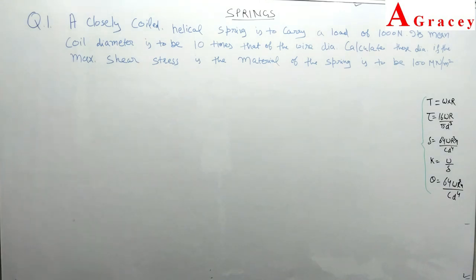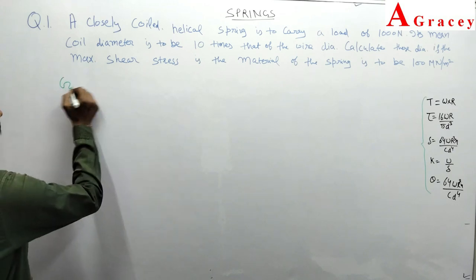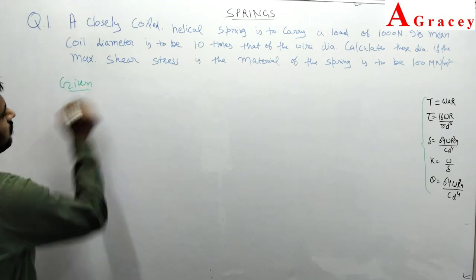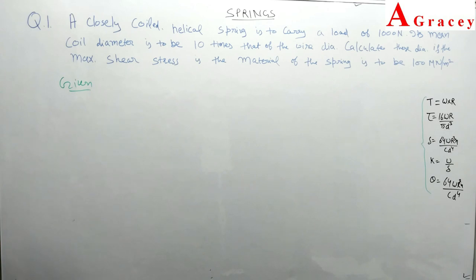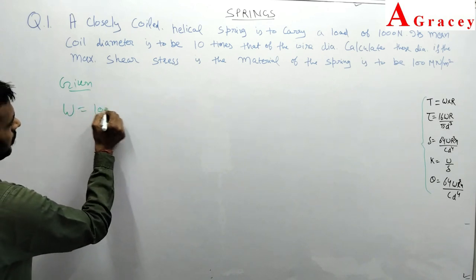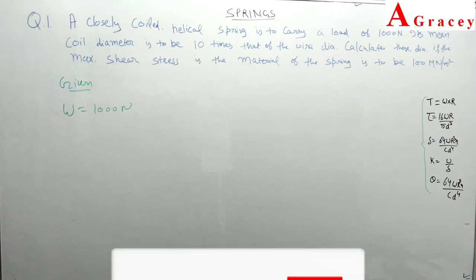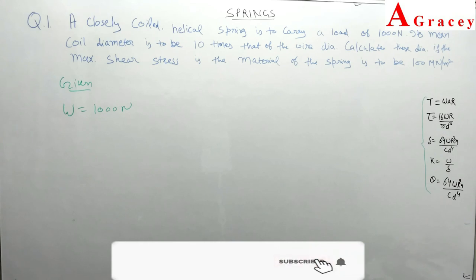The first question: a close coil helical spring is to carry a load of 1000 newton. So what is given to you? First, the axial load W = 1000 newton. Second, the mean coil diameter is to be 10 times the wire diameter. We need to calculate the diameters.